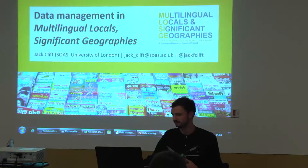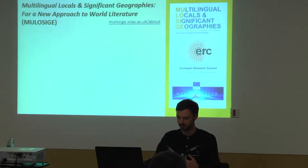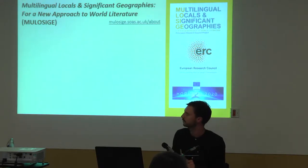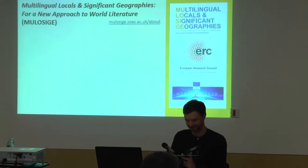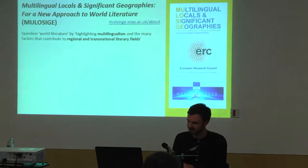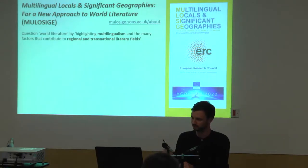Multilingual Local Significant Geographies is a European Commission Horizon 2020 scheme, often abbreviated to MOLOSIG. We haven't standardised the way to say that word, so say it however you like. The project brings into question the status of world literature as a discipline and the dominance of hegemonic languages within it, such as French, English, Spanish and German, by highlighting the multilingualism and the many factors that contribute to regional and transnational literary fields. I've been quoting from the project description on our website, and I've put the URL there so you can see it.